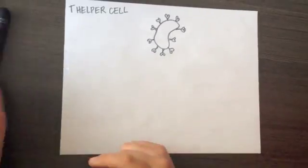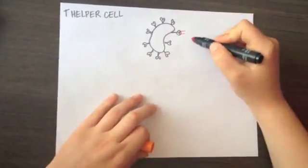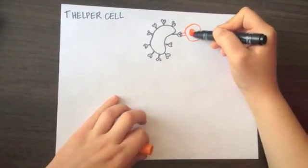Helper T cells are required for almost all adaptive immune responses because they recognize foreign antigens and secrete substances called cytokines that activate T and B cells.